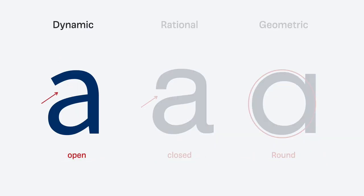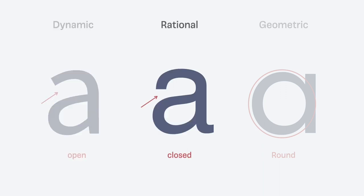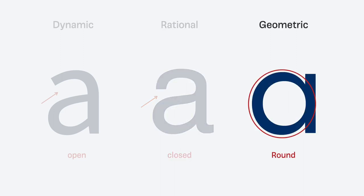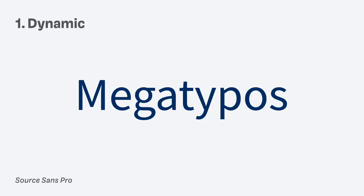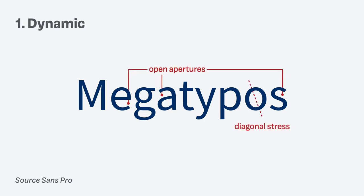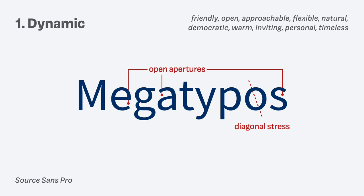The dynamic form model has open shapes — you can see the aperture of the A is open. The rational shape has a closed aperture. The geometric one is very constructed from its letter shape, like with a circle. We see this even clearer when spelling out a word: the dynamic form model shows open apertures and slightly angled diagonal stress. We can attach adjectives to these shapes — friendly, open, approachable — making it easier to choose a typeface that conveys these feelings.